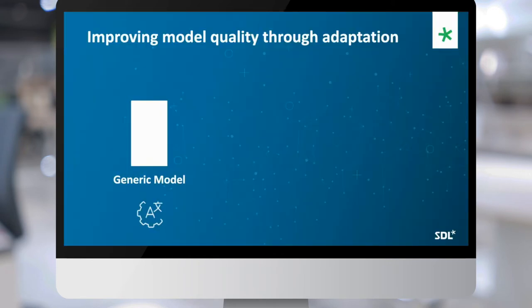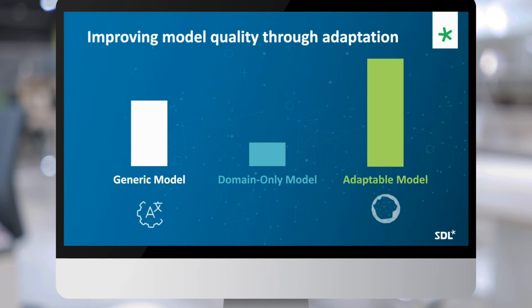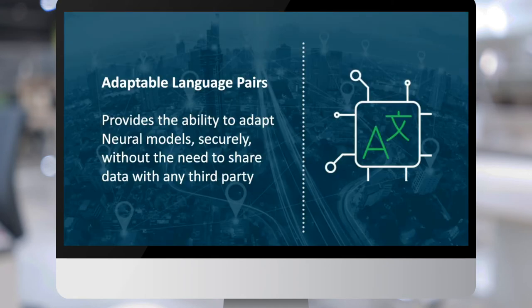Last year we added the ability to adapt models to your own data to raise quality and make it more nuanced to your needs. Generic models give you a certain amount of quality; domain models cover a specific domain very well. Adaptable models — that's where the magic happens. The adaptable language pair feature provides the ability to adapt models within the software itself, securely, without the need to share data with any third party.